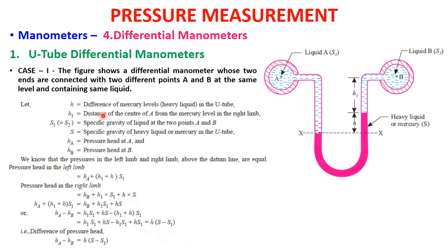Case 1: the figure shows a differential manometer whose two ends are connected at the same level, containing the same liquid. H is the difference of mercury levels in the U-tube. H1 is the distance of the center of A from the mercury level in the right limb. S1 equals S2 is the specific gravity of liquid at points A and B. S is the specific gravity of the heavy liquid or mercury in the U-tube. Ha and Hb are the pressure heads at A and B respectively.